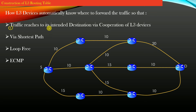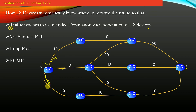Let us understand point one: traffic reaches its intended destination via cooperation of L3 devices. Suppose router S wants to send traffic to router D. Router S must have an L3 routing table entry which says to forward the traffic via a specific interface. When the traffic reaches the next router, that router also looks up its L3 routing table entry and forwards the traffic as dictated — let's say along this path.